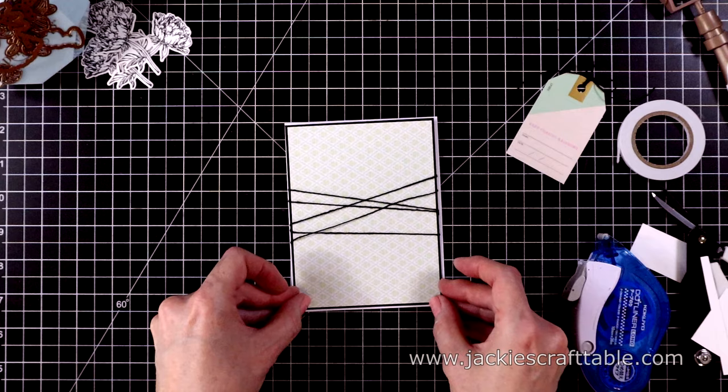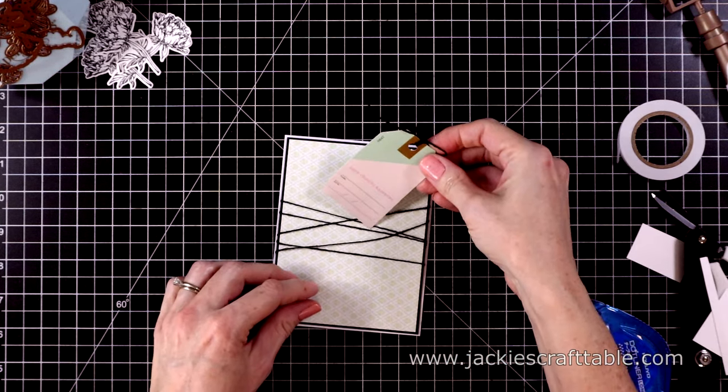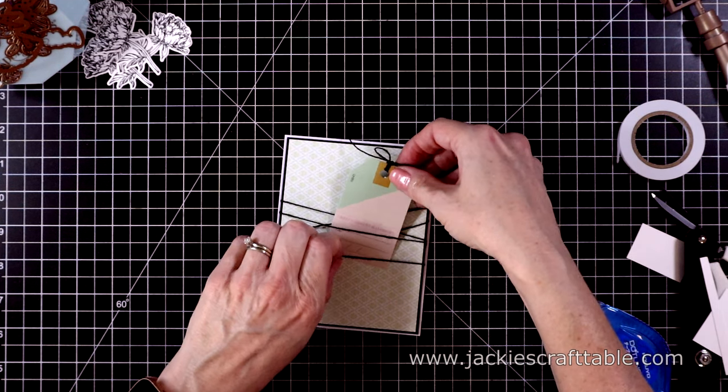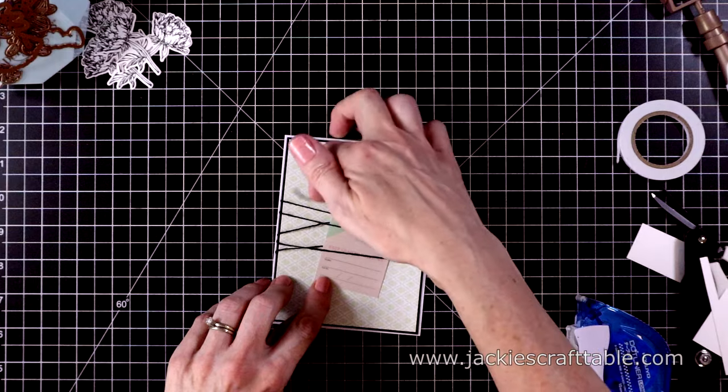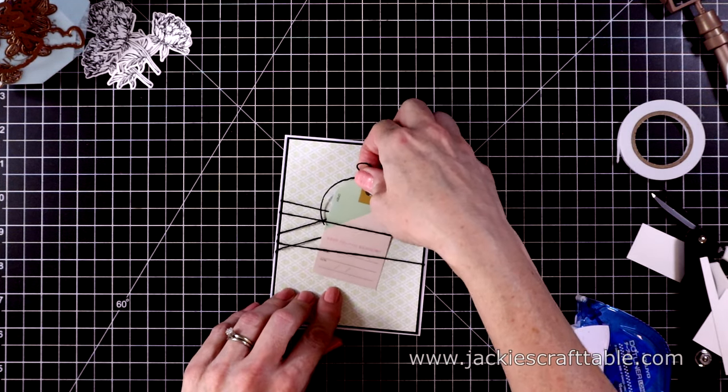Next, I'm going to do something a little different. I'm going to add, well, I'm adding the dot liner behind the tag, which isn't different at all. But I'm going to tuck it in the strings, the twine strings here. And I just think that looks so cute.